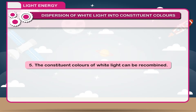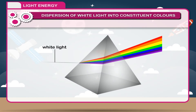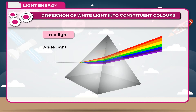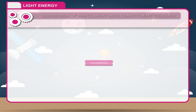5. The constituent colours of white light can be recombined. 6. Different coloured light waves have different wavelengths. Red light has the largest wavelength and violet light has the least wavelength. Other colours have intermediate wavelengths.